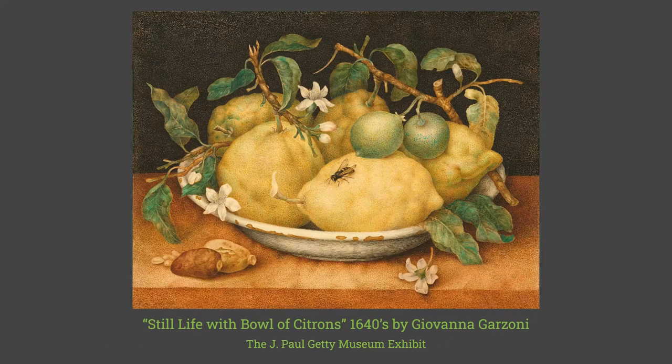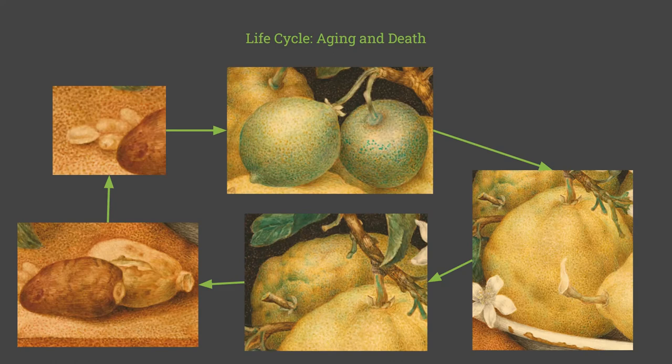In 'Still Life with Bowl of Citrons,' which she made around the 1640s, you can see that the bright foreground and dark background puts the spotlight on the bowl of lemons. There are few straight lines, while there is an abundance of curved and bumpy lines, which emphasizes the natural imperfections of nature.